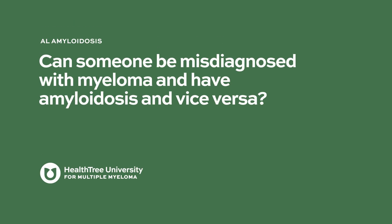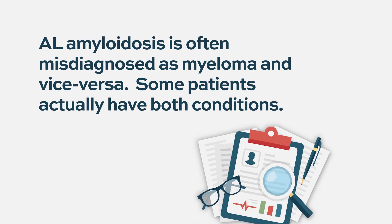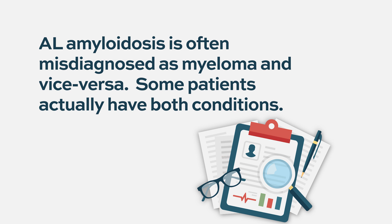Can someone be misdiagnosed with myeloma and have amyloidosis and vice versa? Yes, one can be misdiagnosed with amyloidosis and have multiple myeloma, or vice versa. Some patients actually have both — features of multiple myeloma and trouble related to amyloidosis. Sometimes we see this where somebody has abnormal cells in the bone marrow and the abnormal protein in the blood, and a hematologist or oncologist who doesn't see a lot of these disorders calls it multiple myeloma.